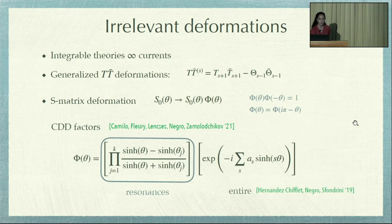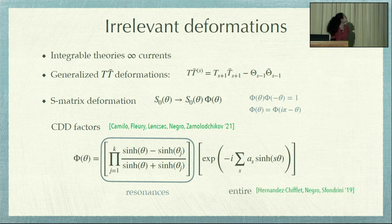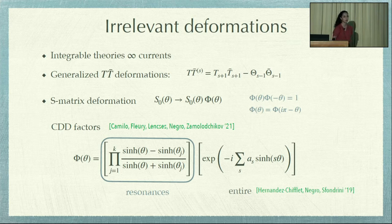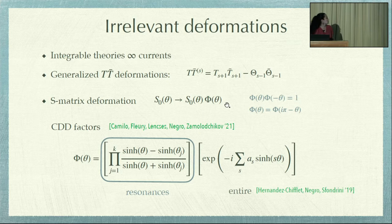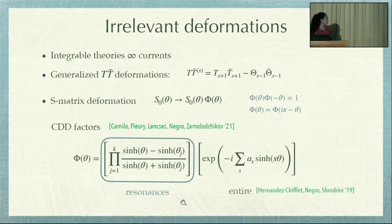Now I'd like to go into generalized TT-bar deformations. These are relevant for integrable theories. As we know, we have infinite conserved currents in integrable theories, so we can construct other irrelevant operators out of these higher-spin currents in a similar way to TT-bar. The only thing I will use about these deformations is really their S-matrix definition. Since we are keeping integrability in the spectrum, we can parameterize this factor phi in terms of CDD factors, which obey unitarity and crossing.